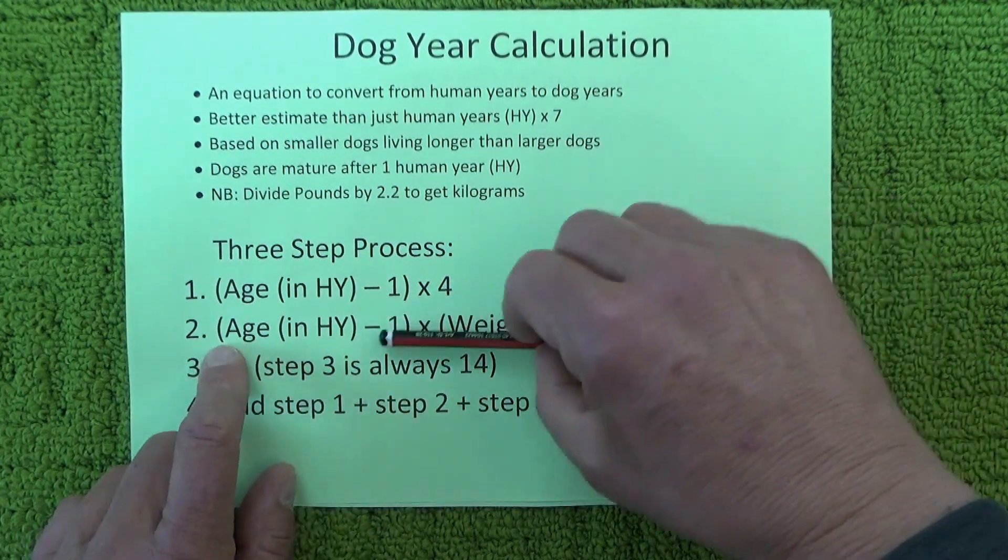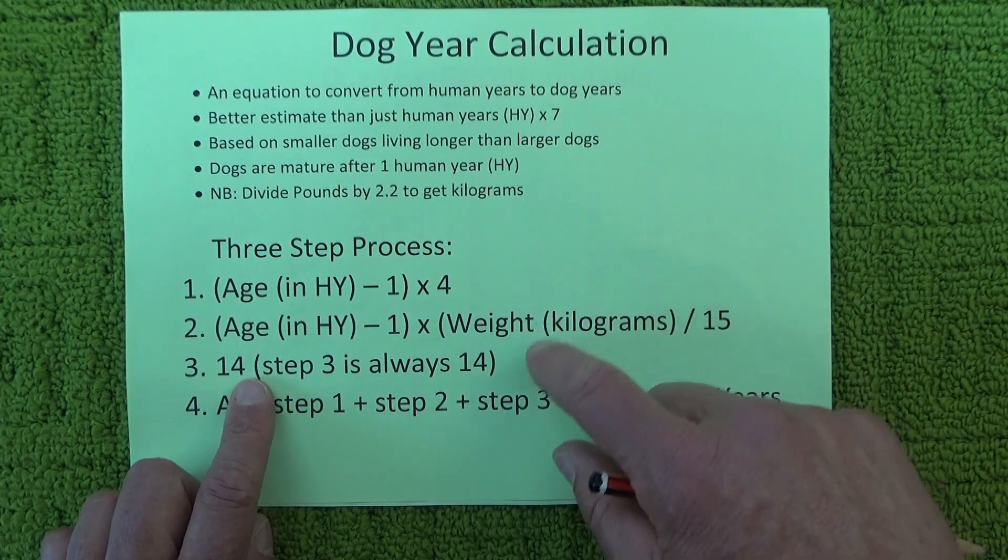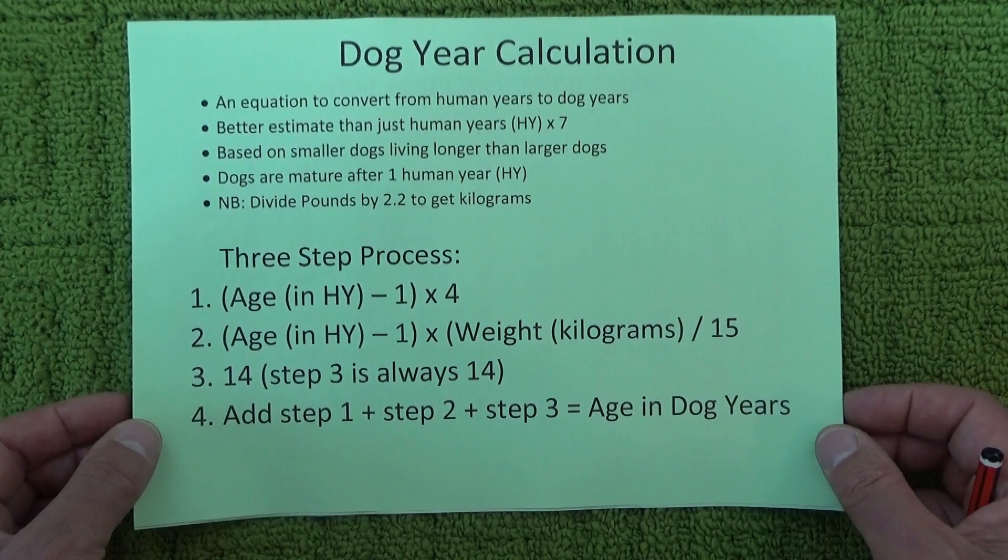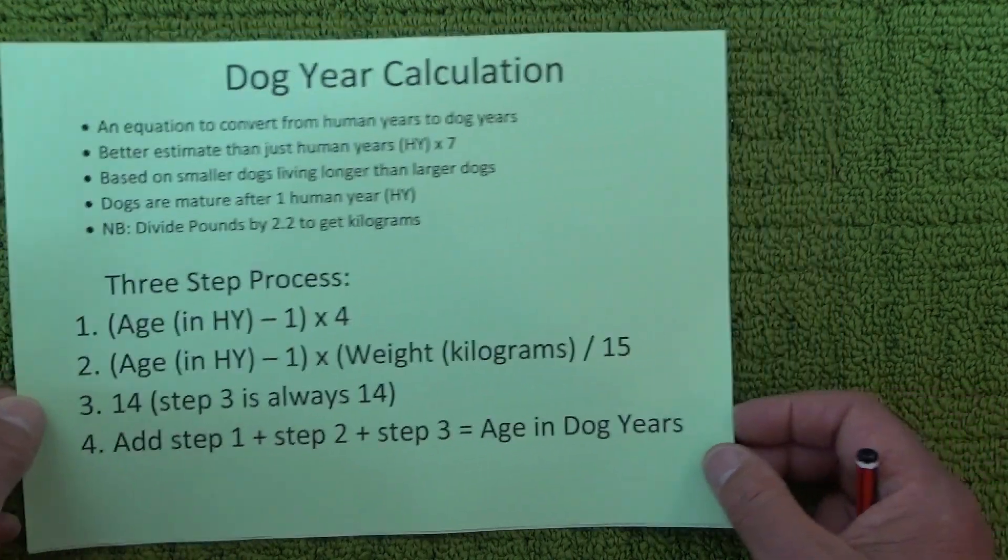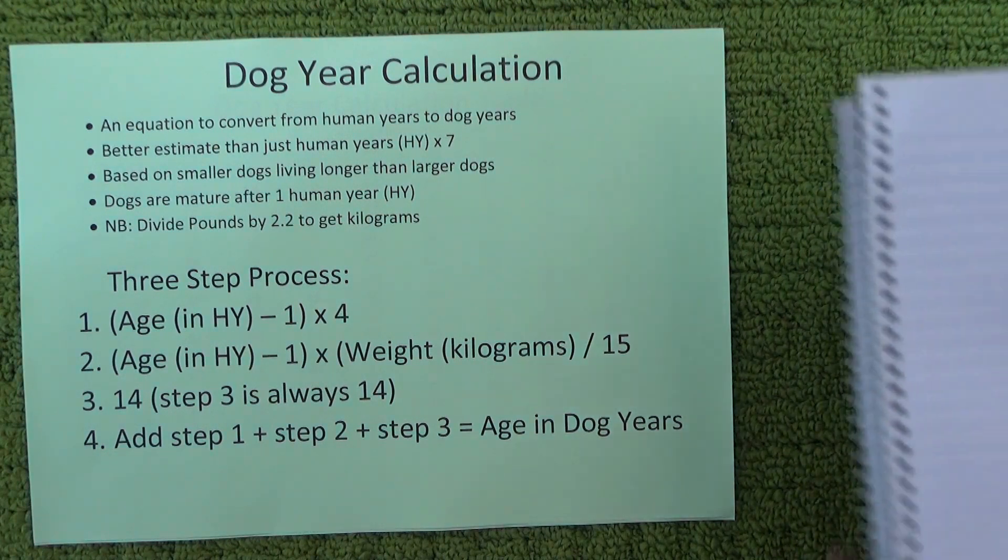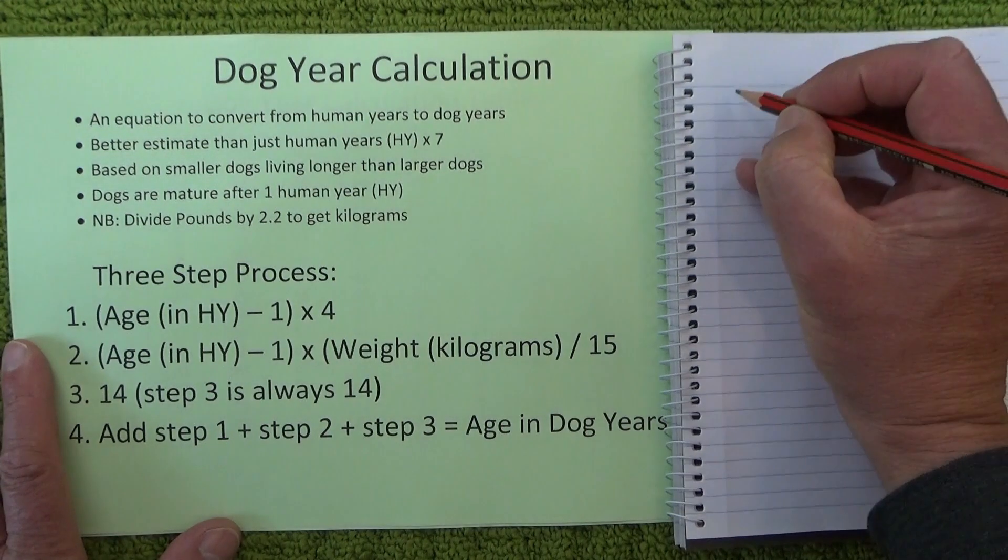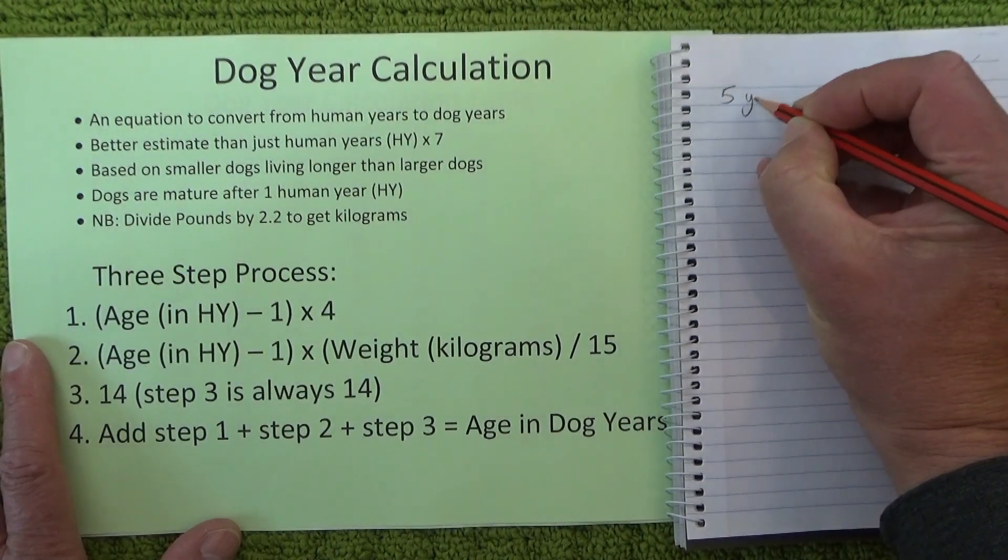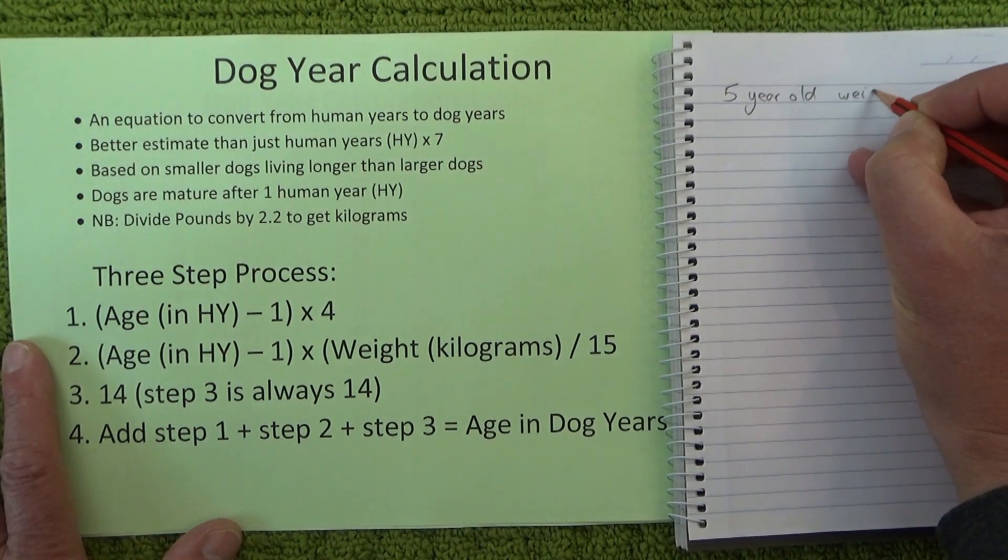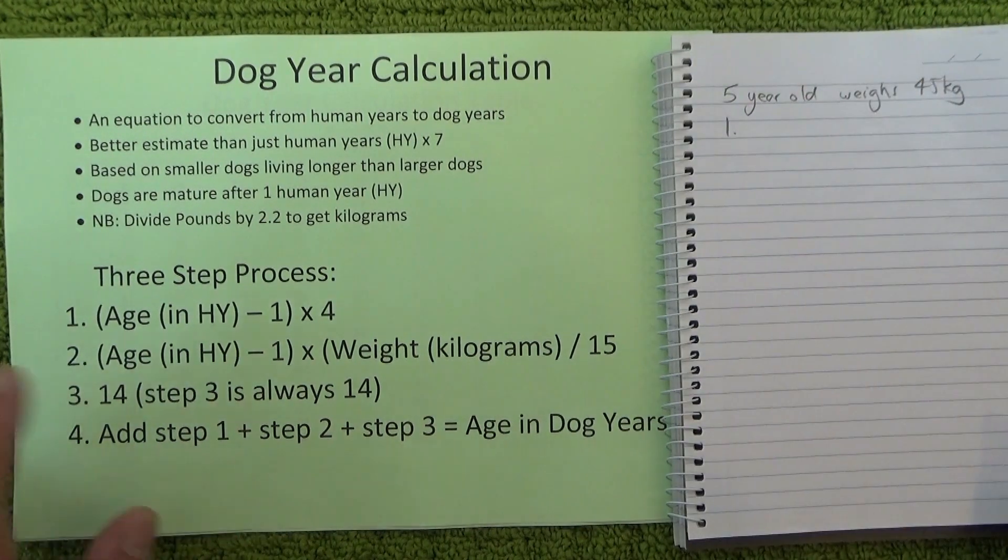You work out a number for step one, a number for step two, a number for step three, add the three steps together, and you've got an age in dog years. I'll show you how that works. Say, for instance, you've got a five-year-old dog that weighs 45 kilos.